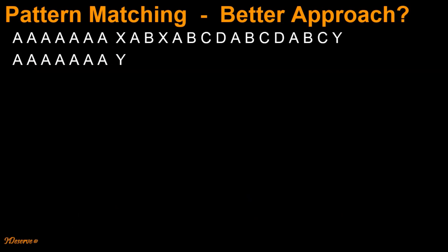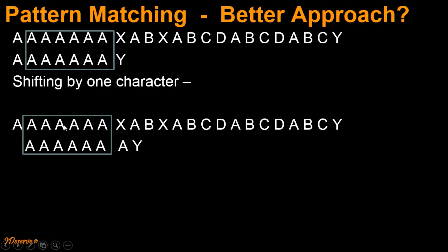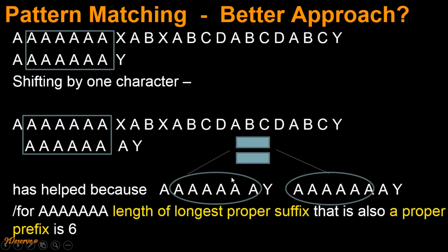Let's try to understand this concept using another example. Here again, all the characters of the pattern before character Y have matched with the text. After the mismatch, if we right shift this pattern by one character we will reach a new state. Notice that these 6 characters matched with this portion of the text, and by shifting the pattern by one character what we are trying to do is match the same portion of the text with the first 6 characters. Here there is a match: the last 6 characters of the substring are equal to the first 6 characters. For this particular substring formed by 7 i's, the length of the longest proper suffix that is also a proper prefix is 6, and therefore shifting by one character has helped here.